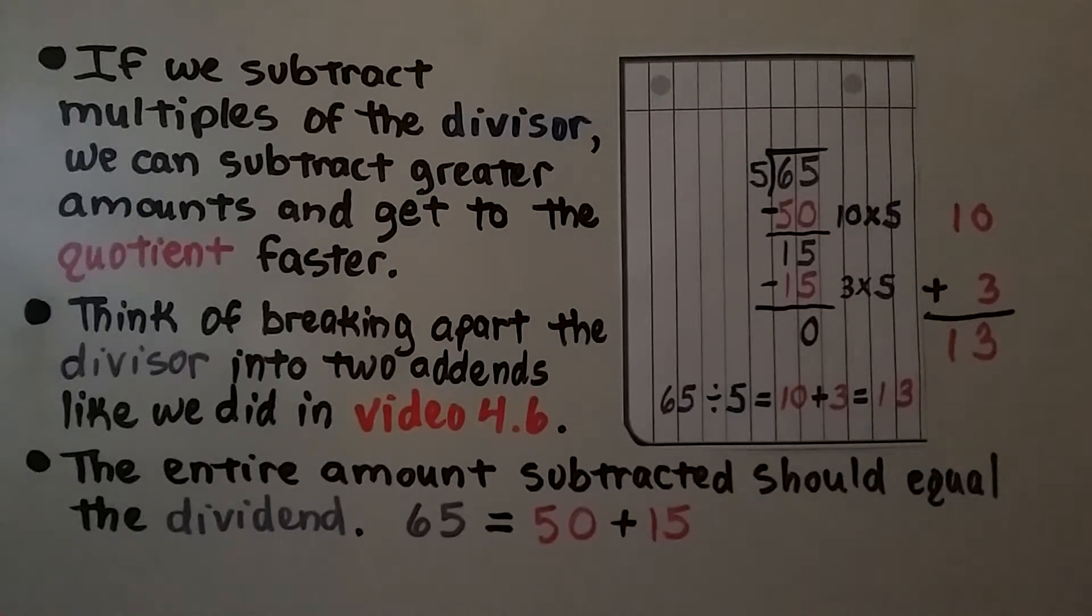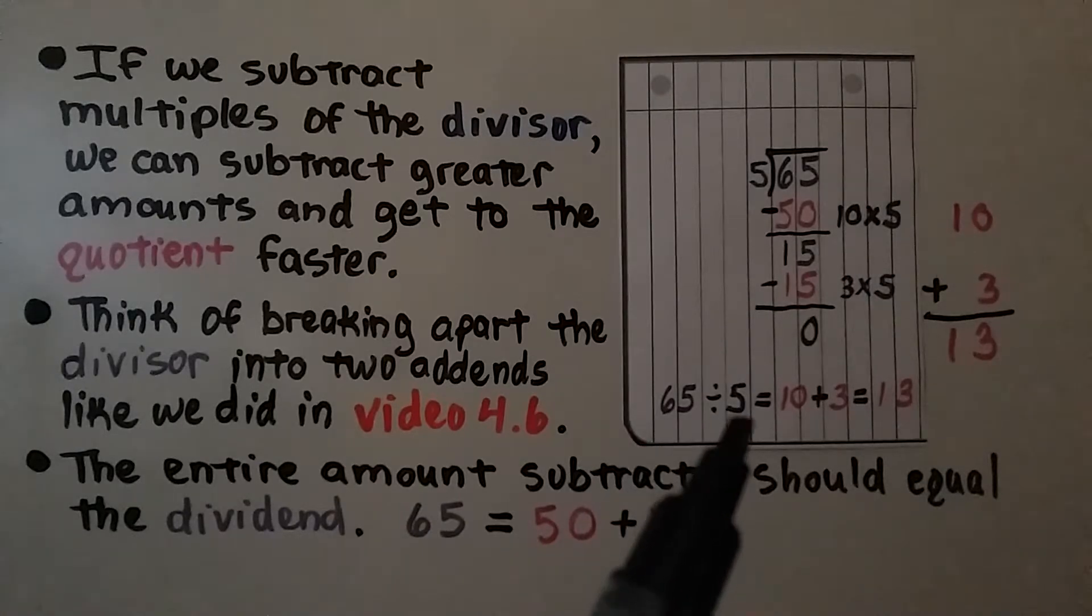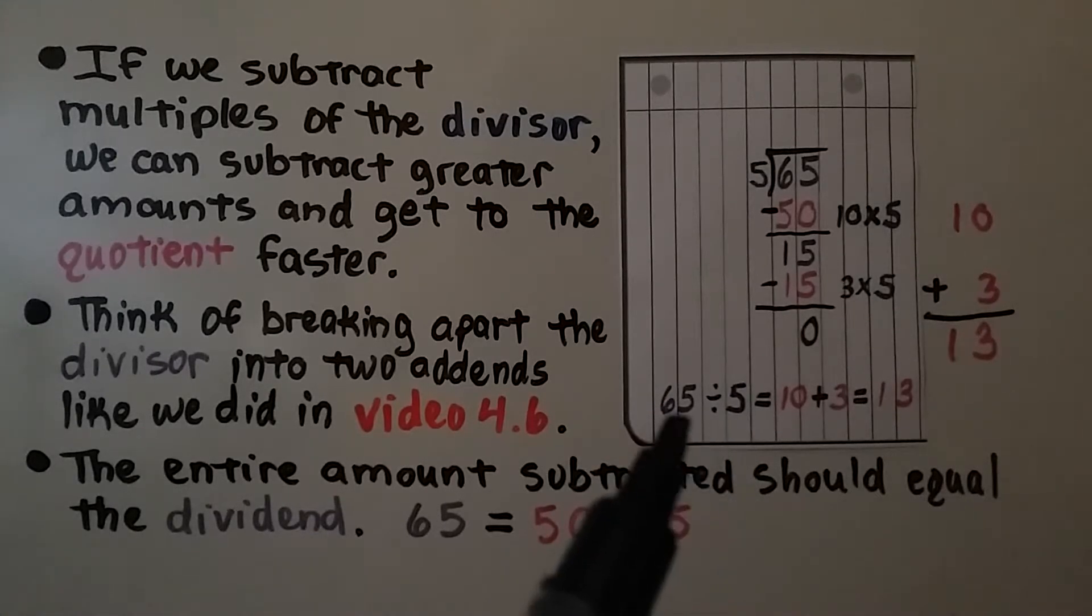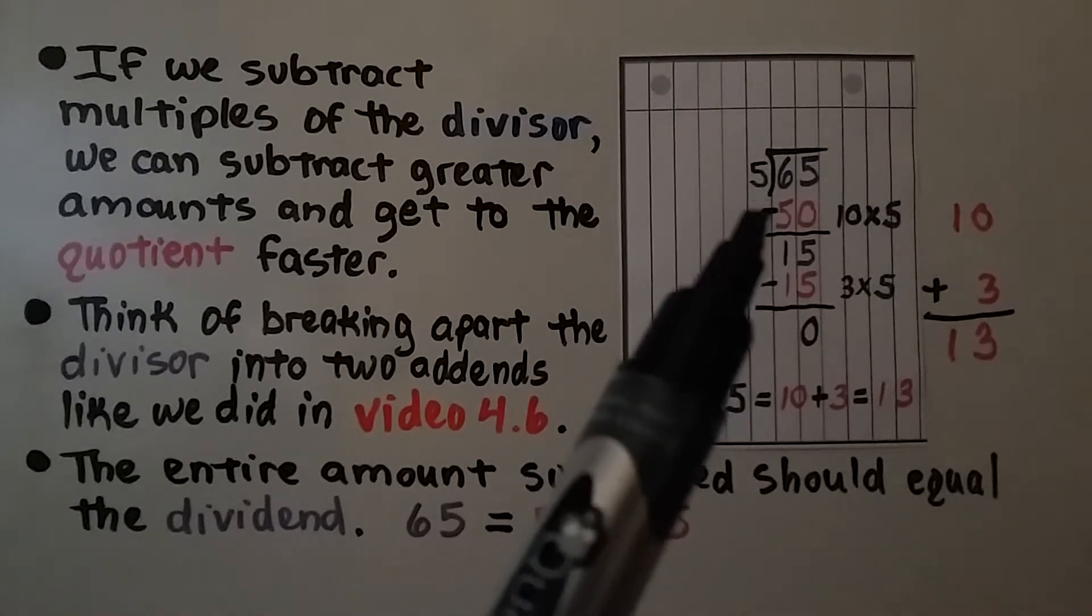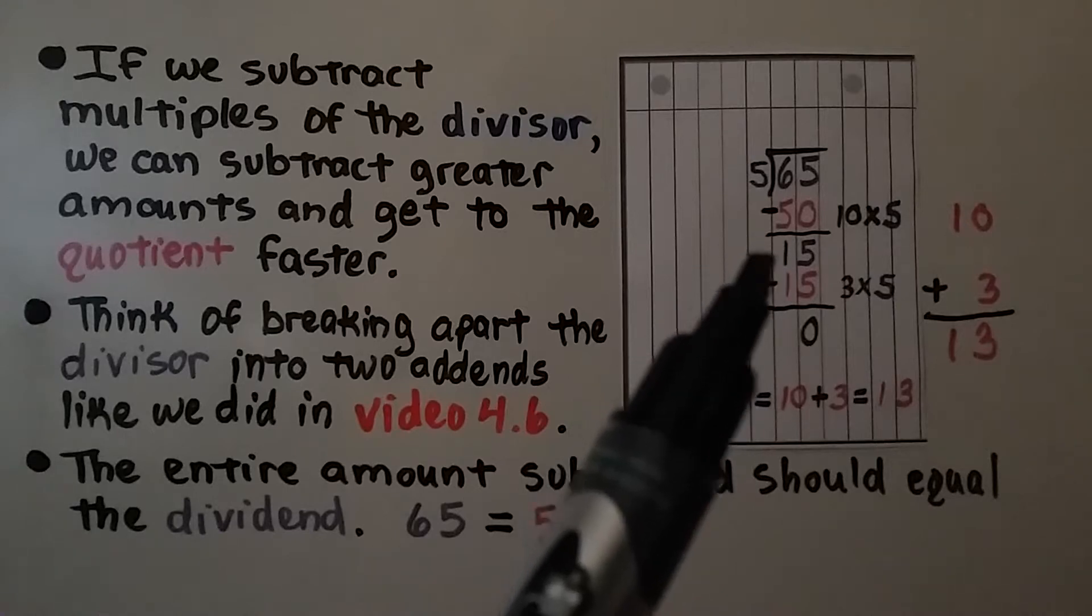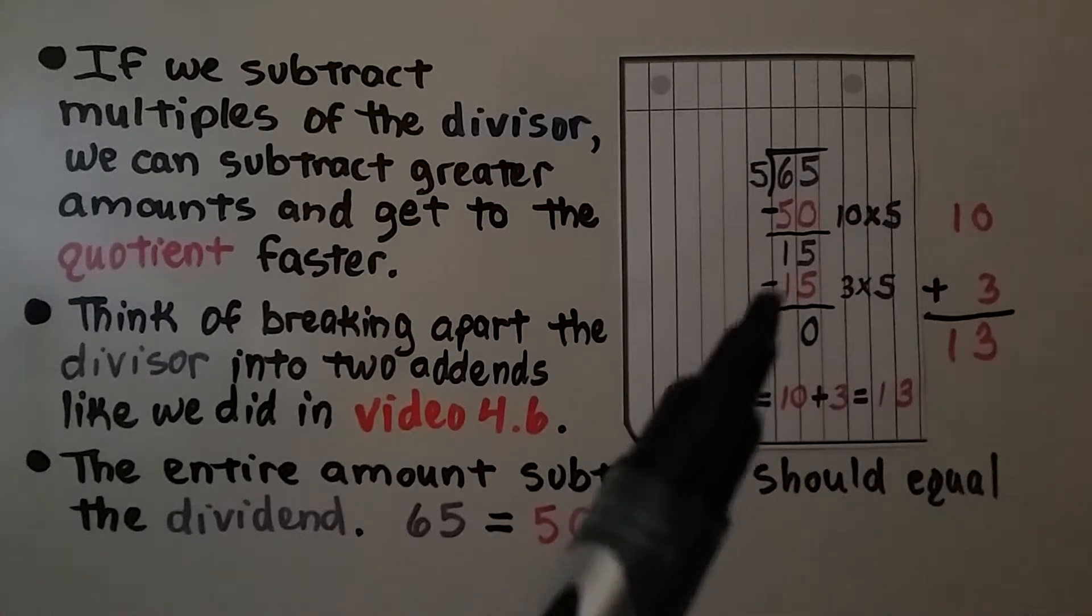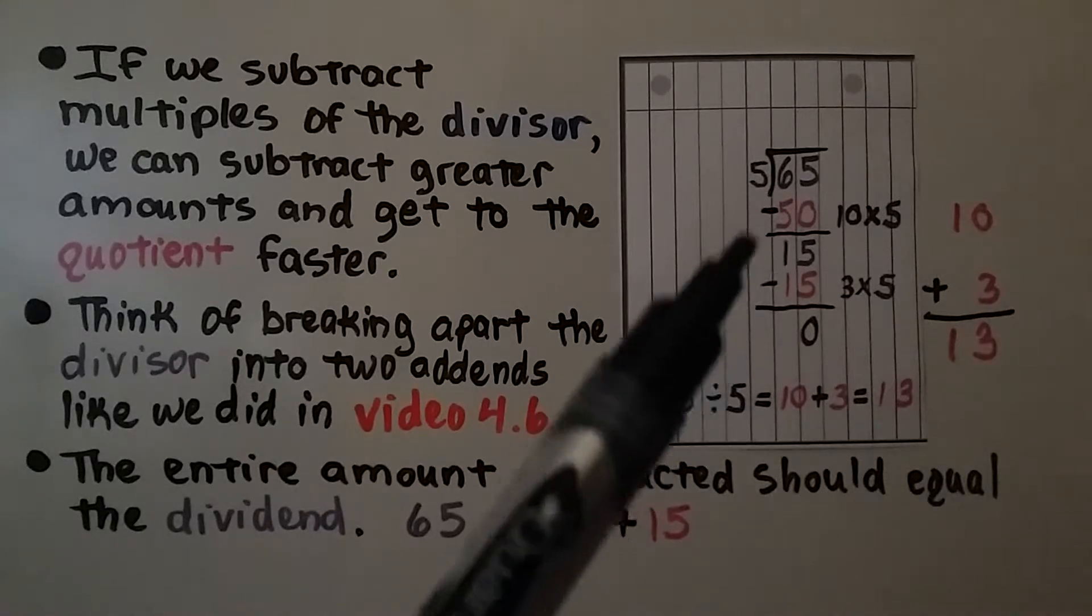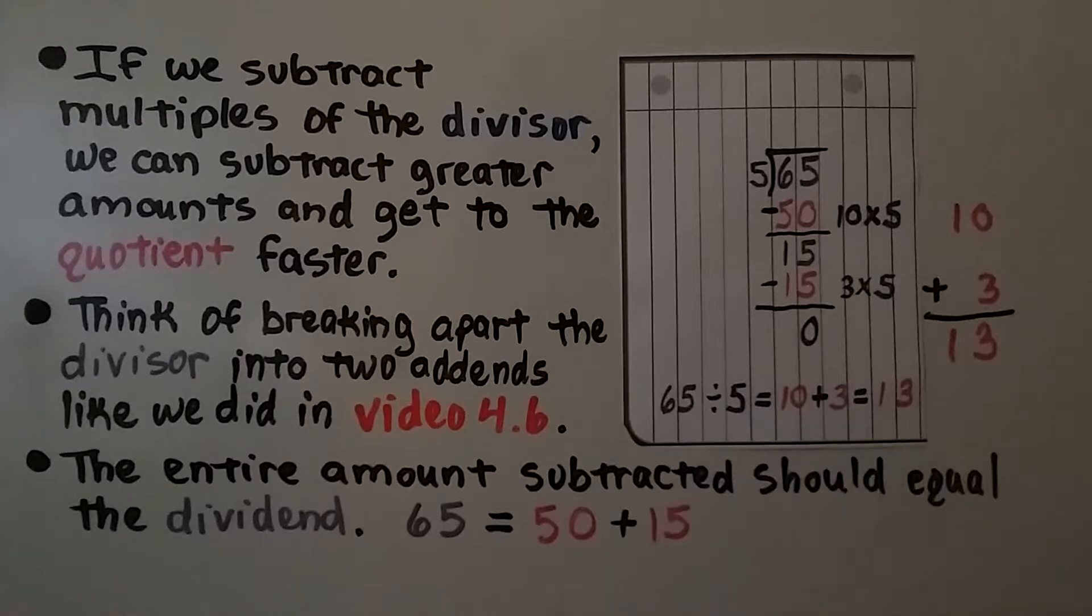If we subtract multiples of the divisor, we can subtract greater amounts and get to the quotient faster. Think of breaking apart the divisor into two addends like we did in video 4.6. We have 65 divided by 5. We think about breaking this divisor, 65, into two addends. 5 times 10 is 50, so we can take away a 50 from the 65. That's 10 times 5. We have 15 left when we do our subtraction. 5 times 3 is 15, so we can take the 15 away and we'll be at 0. This was 10, this was 3. We add those quotients together and get 13. So 65 divided by 5 is equal to 13.